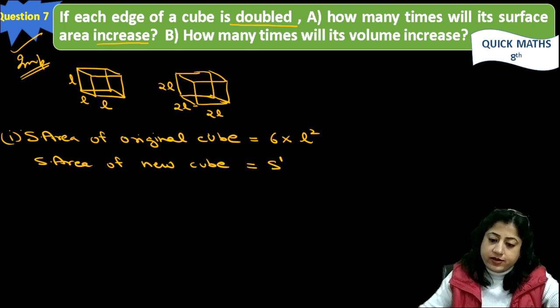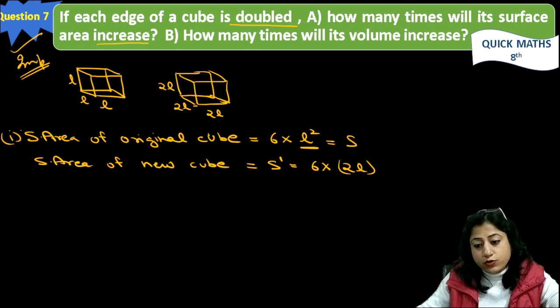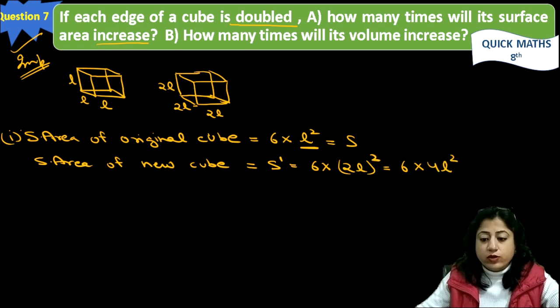Then this will be suppose S dash and this is S. So it will be 6 into 2L. Now this length becomes double, so it is 2L, 2L square, so it will be 6 into 4L square. After opening the square, it will be 4, 2 becomes 4, 4L square.